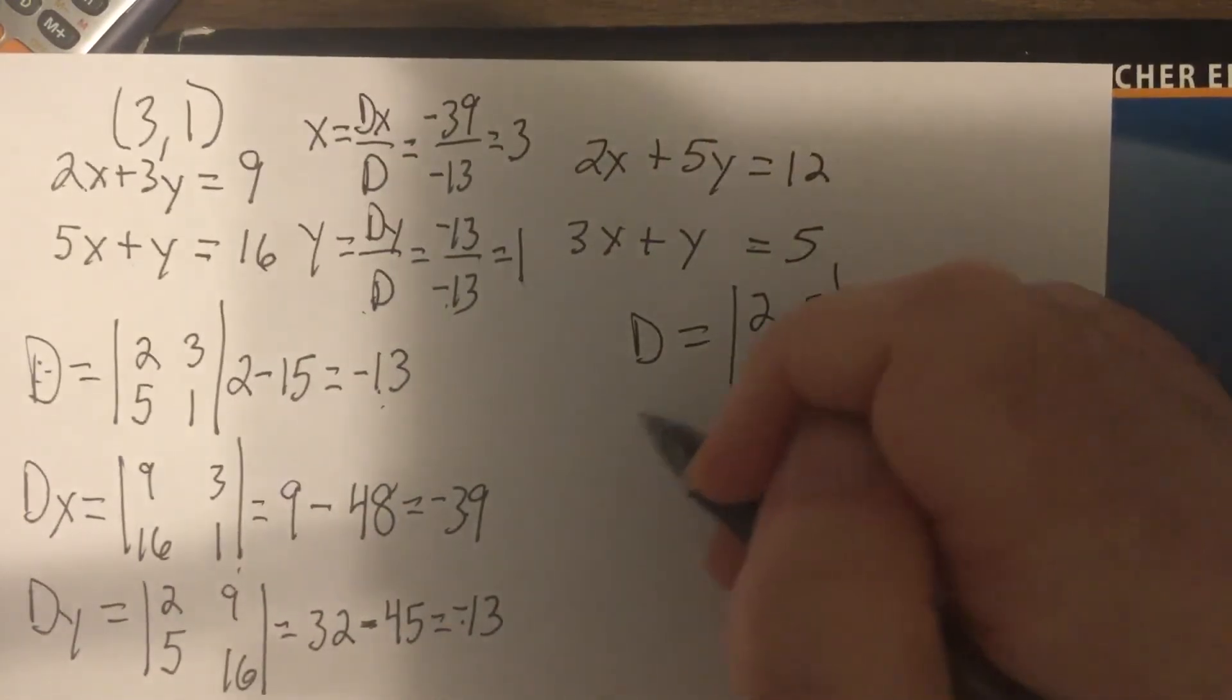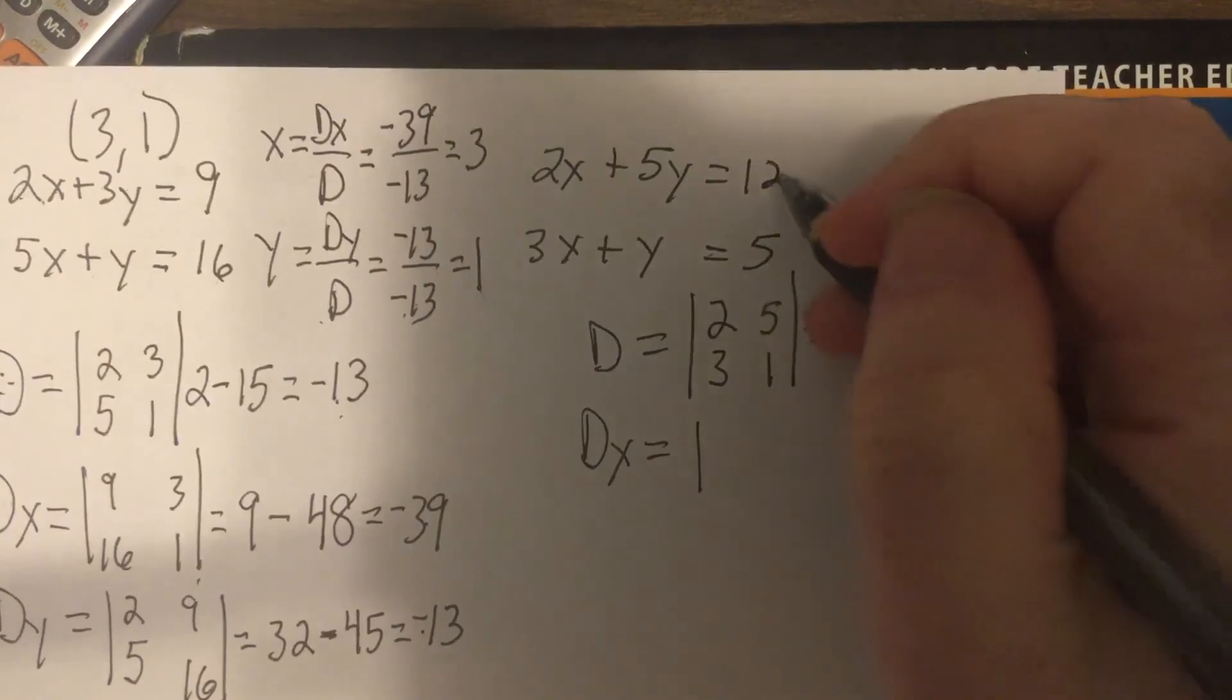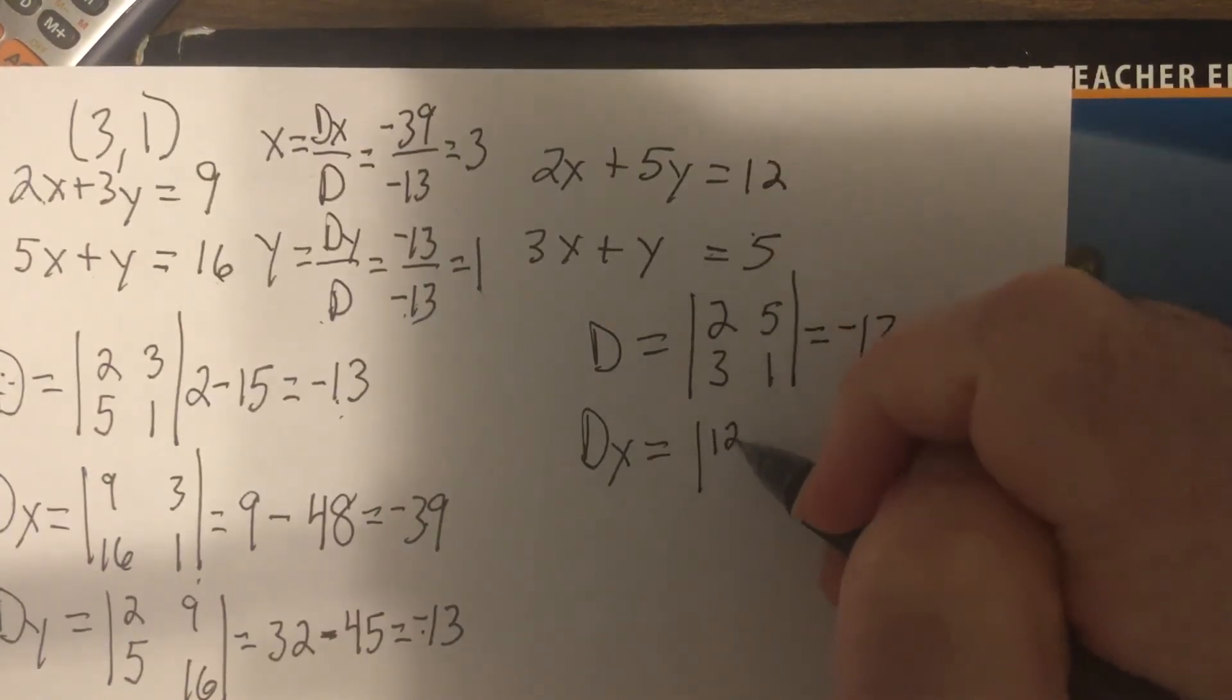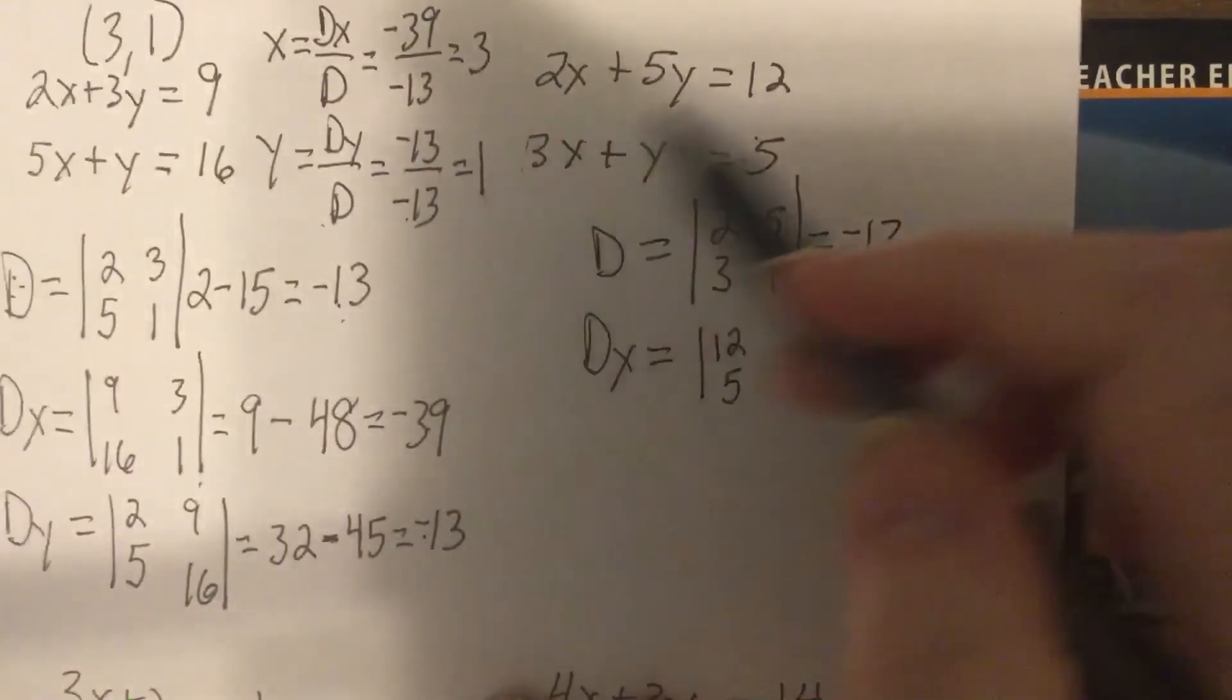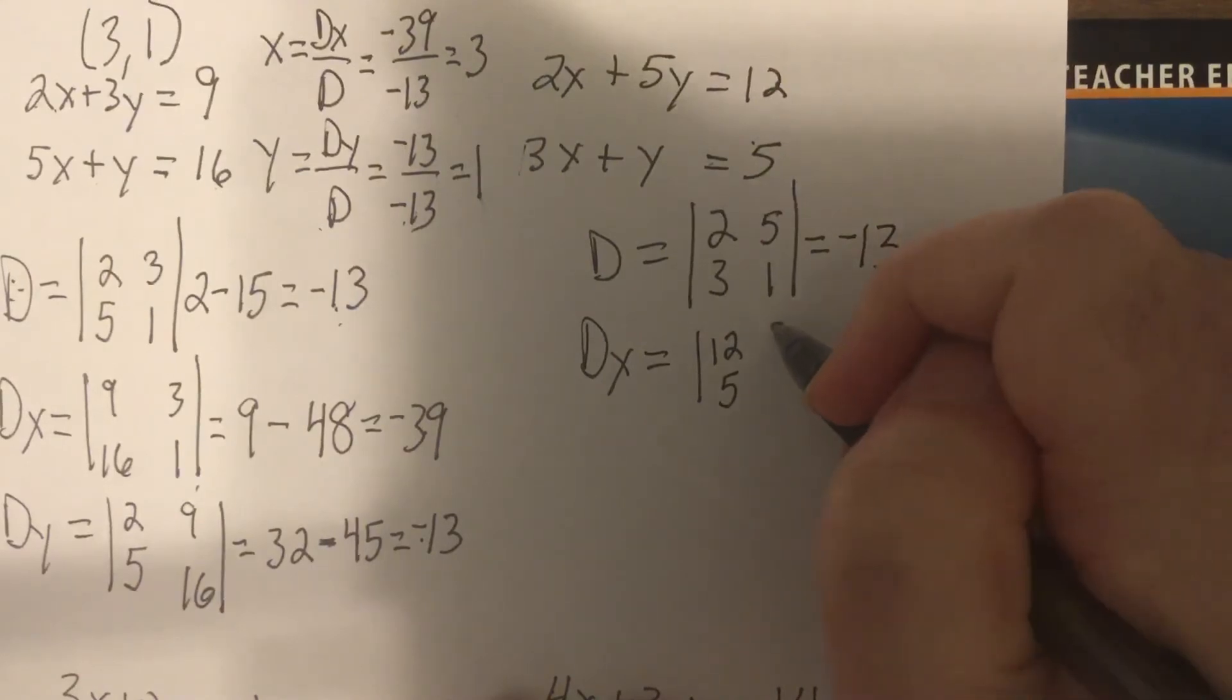For a minute there, I thought I had the same problem. So DX is 12, 5. Switch the X coefficients with the constants and then 5, 1.